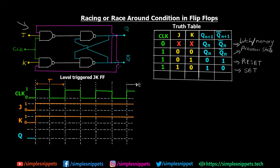We'll also understand the basic difference between racing and toggle. Looking at the truth table of JK flip-flop — all the initial states when clock is zero give us the latch or memory state. We are only interested in the last case wherein clock is 1, J is 1, and K is 1 — that's where toggling happens, but in level triggering we'll see how it converts into race.